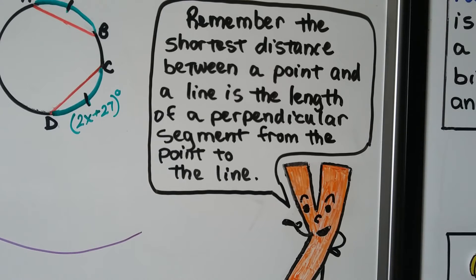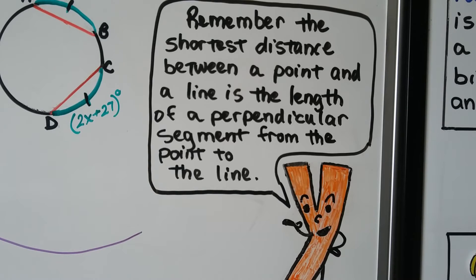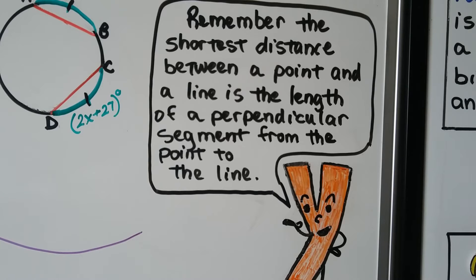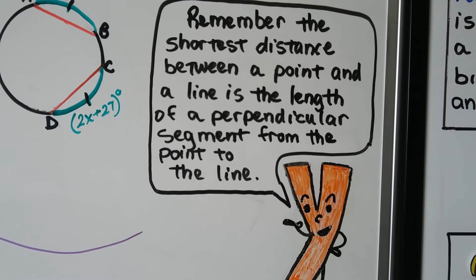Now we want you to remember the shortest distance between a point and a line is the length of a perpendicular segment from the point to the line, which is going to bring us to our next theorem.